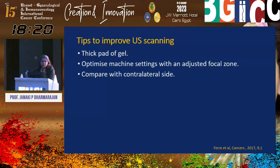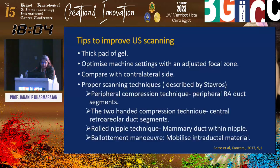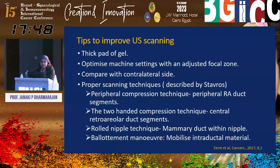To improve ultrasound scanning, we can use a thick pad of gel to see the lesion better, though we have to be very quick. We can optimize machine settings with adjusted focal zone near the skin, and always compare with the contralateral side, which is very important. Proper scanning techniques have been described by Stavros. Peripheral compression technique is used to see peripheral retroareolar duct segments; two-handed compression technique for central retroareolar duct segments. We can do a roll nipple technique to visualize the mammary duct within the nipple, and the Valsalva maneuver to mobilize inter-ductal material.